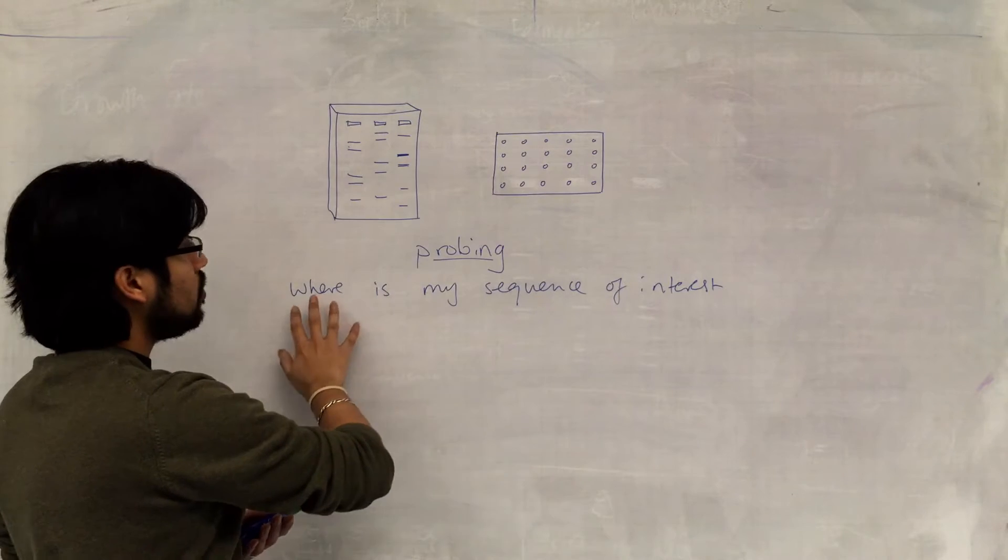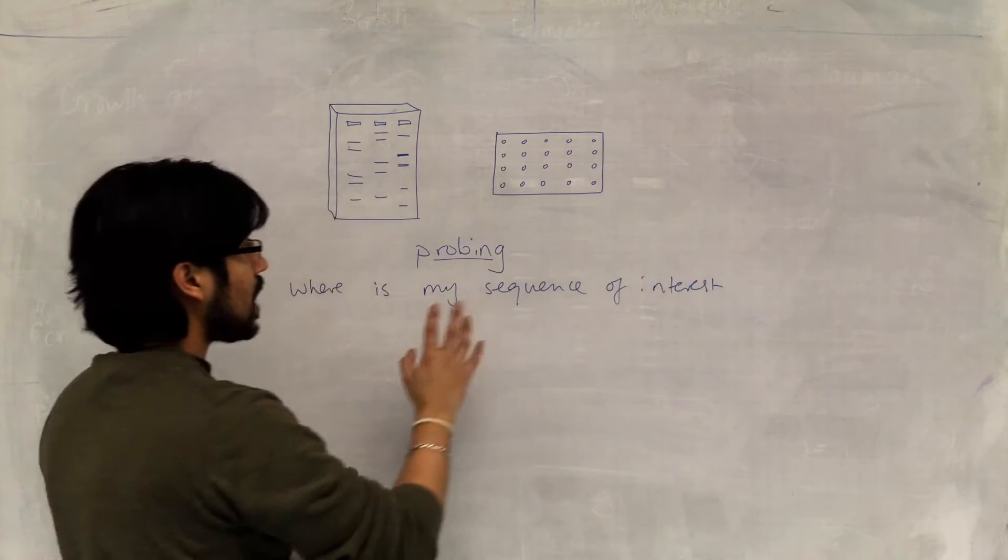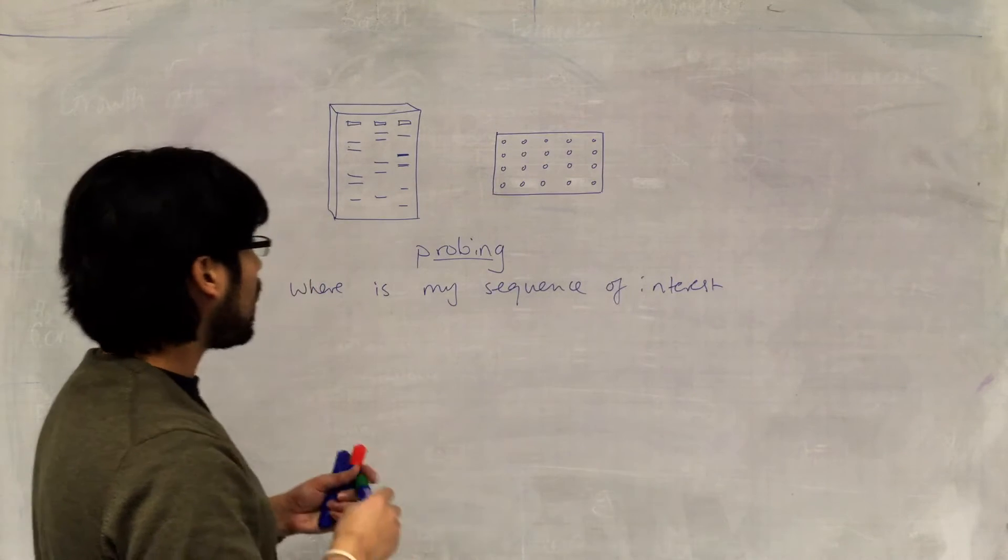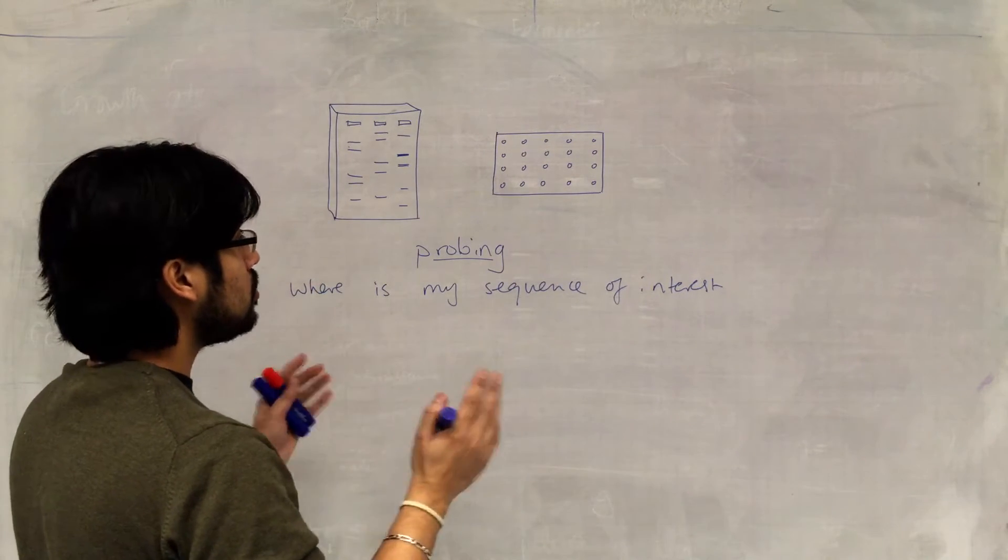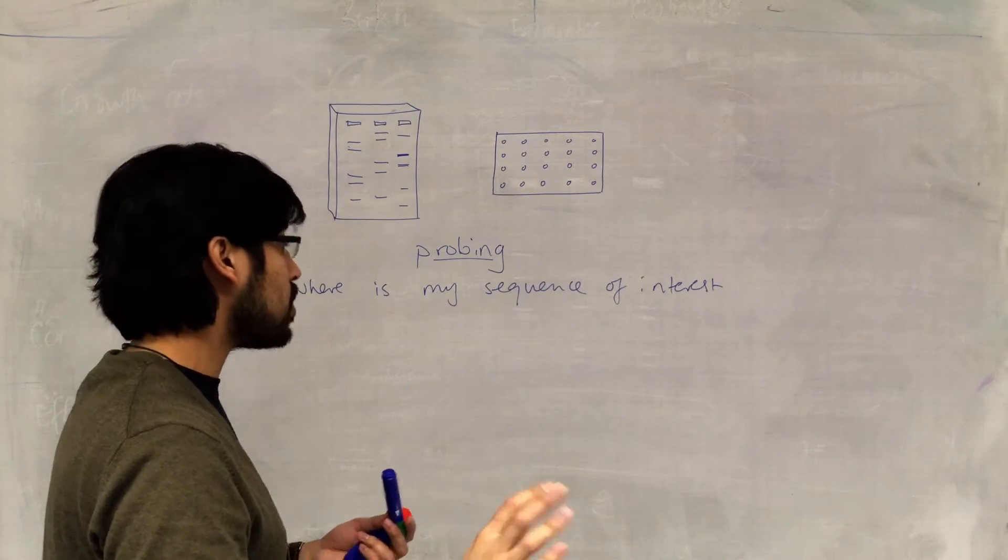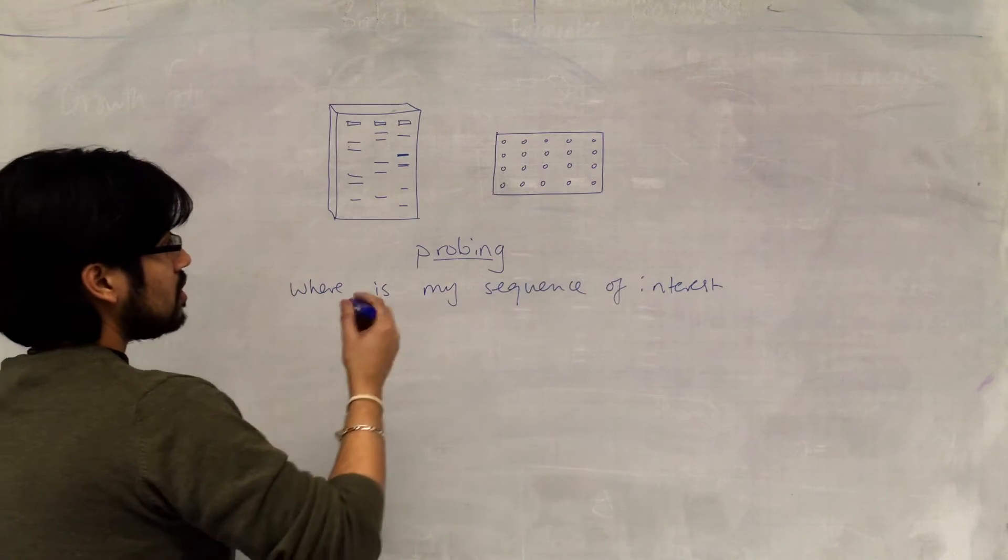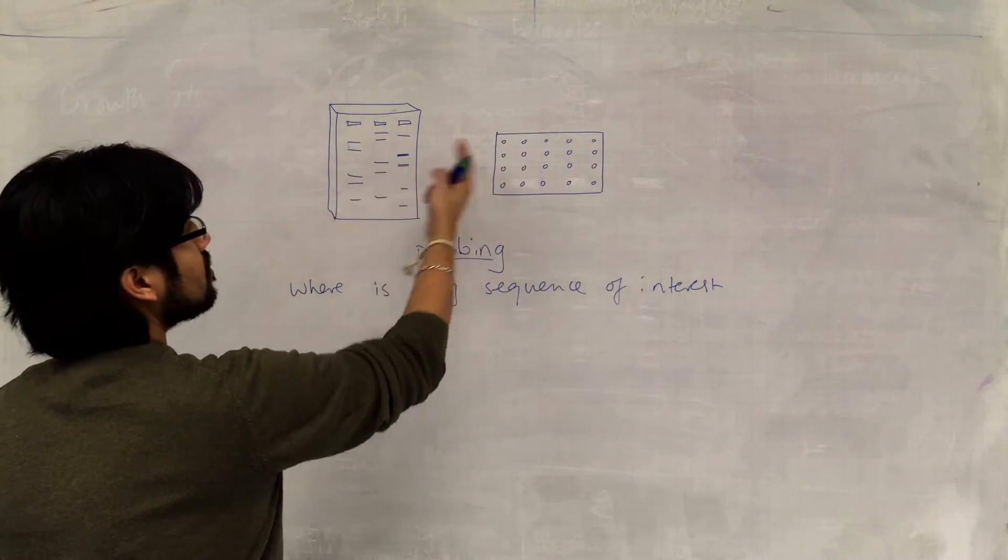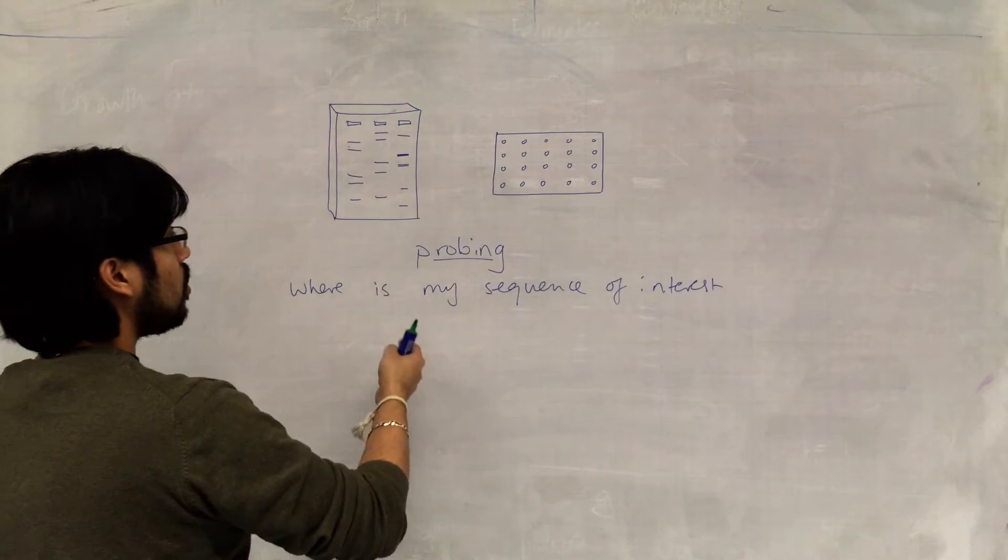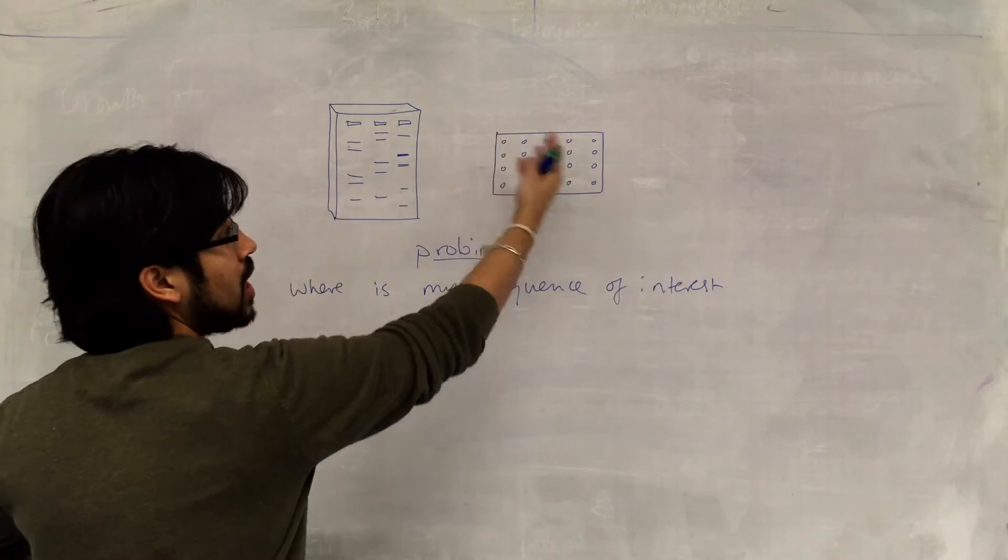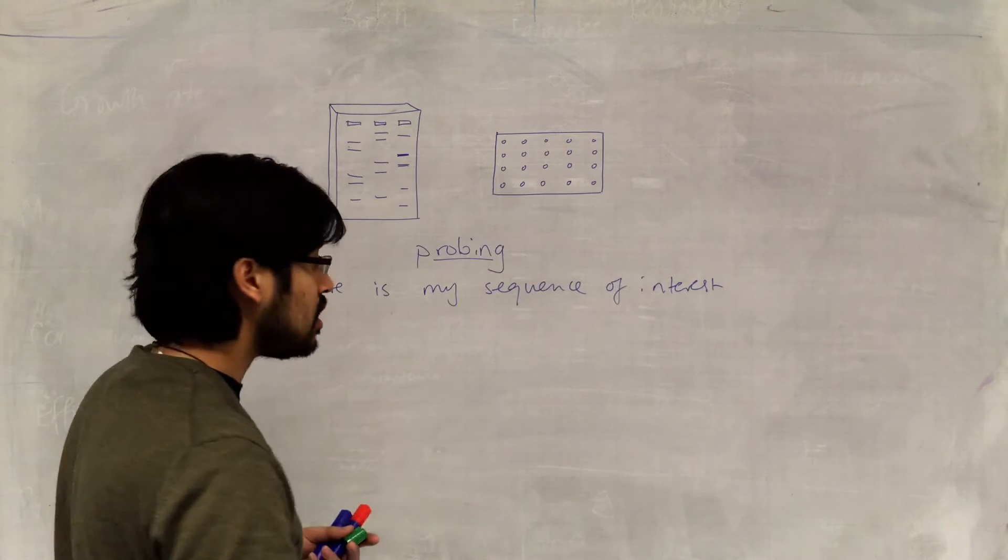So I'm looking for a particular sequence, and the way we do that is by probing. And essentially what we do, the principle is quite straightforward. We essentially have a sequence that we want to find. Where is the sequence? So the sequence might belong to a gene, it might be a mutated sequence. I want to see how many individuals have a mutated gene.